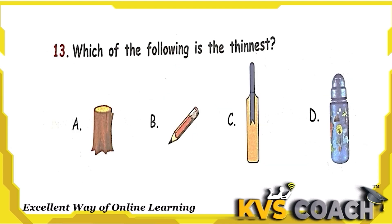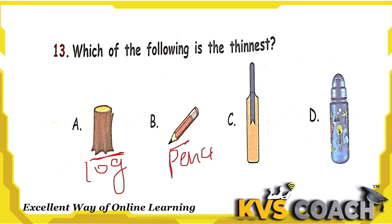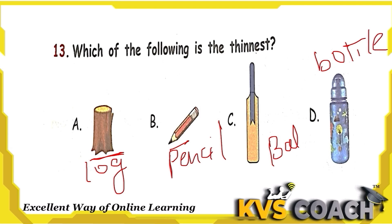The next question is: which of the following is the thinnest? The objects are a log, a pencil, a bat, and a bottle. Looking at all the objects, the pencil is the thinnest object. Option B is the right answer.